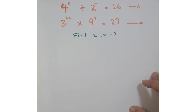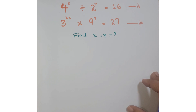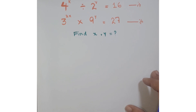Hello friends, welcome to the learning curve. Now look at these two equations. The first equation is 4 to the power x divided by 2 to the power y is equal to 16, and the second equation is 3 to the power 2x multiplied with 9 to the power y is equal to 27. We have to find the value of x and y.